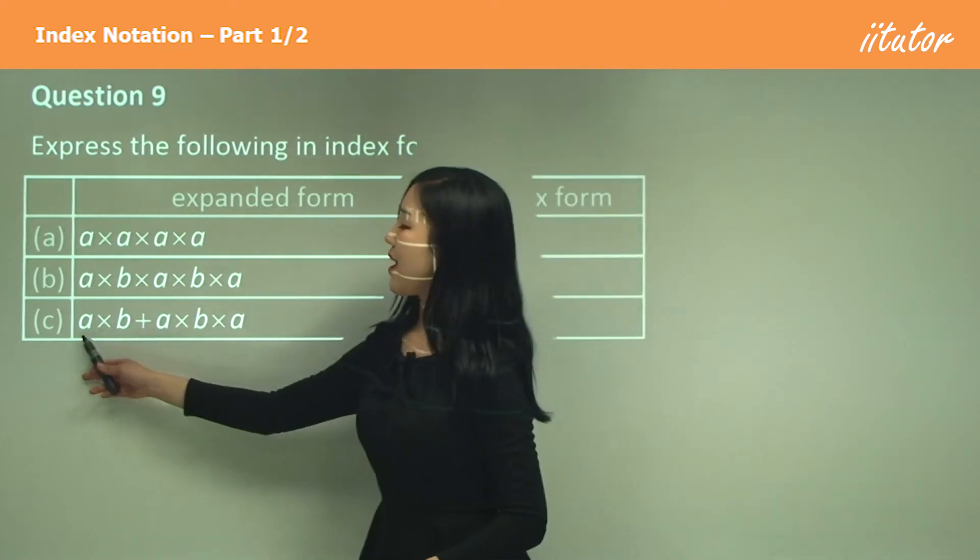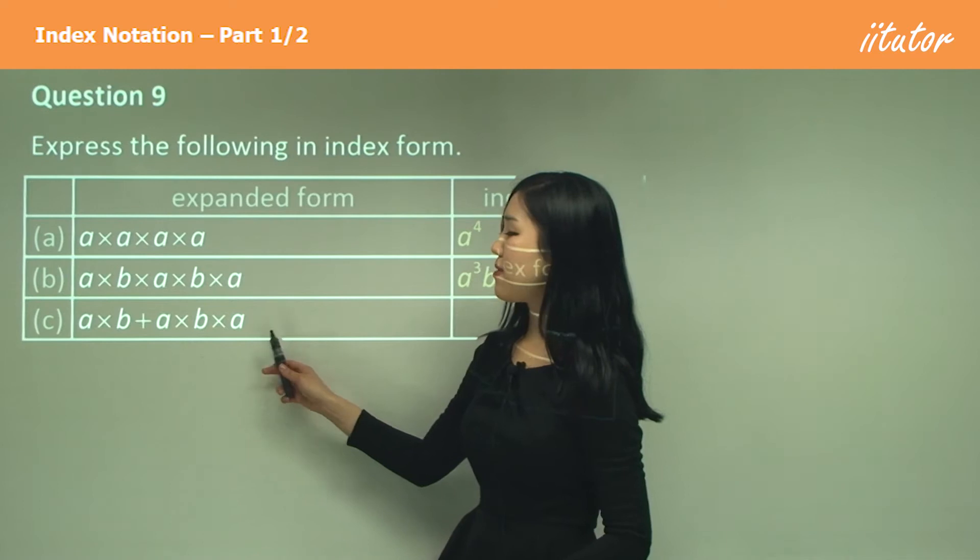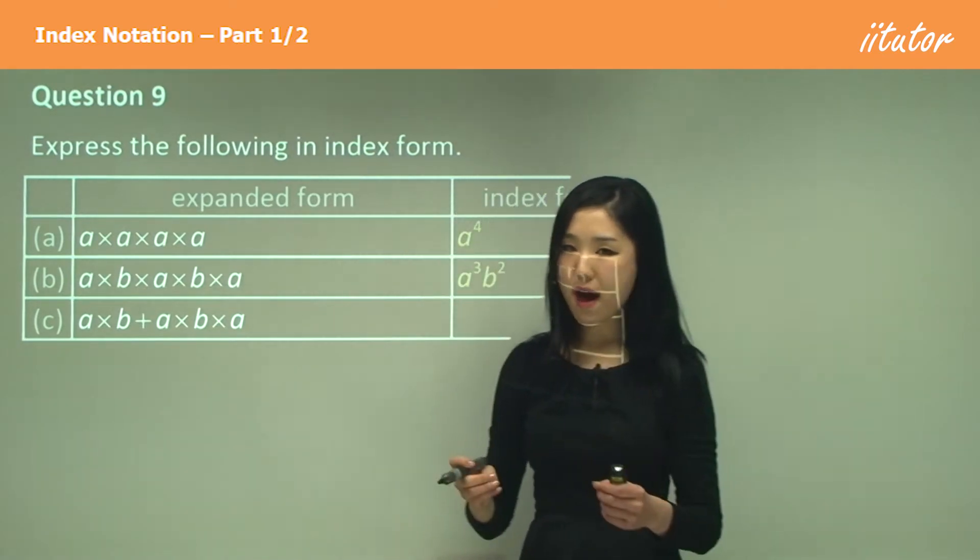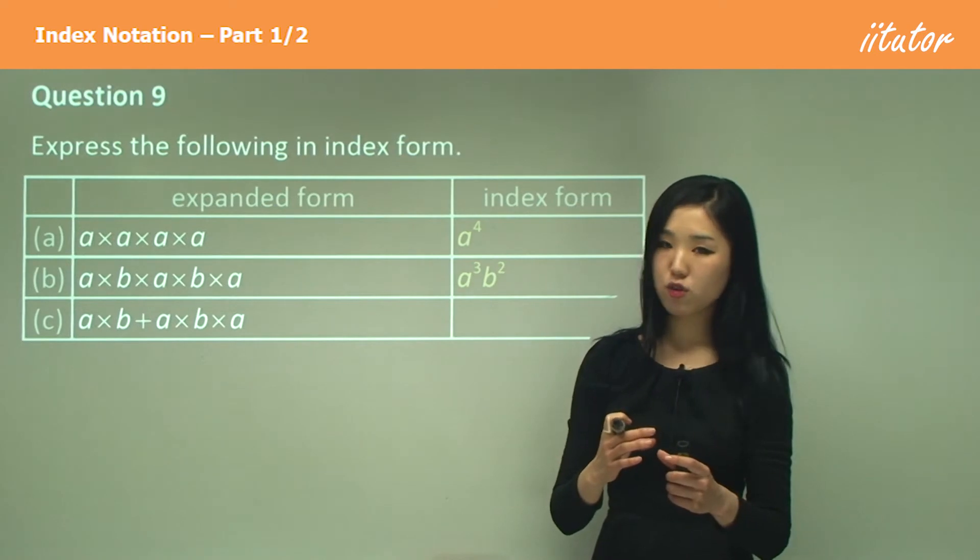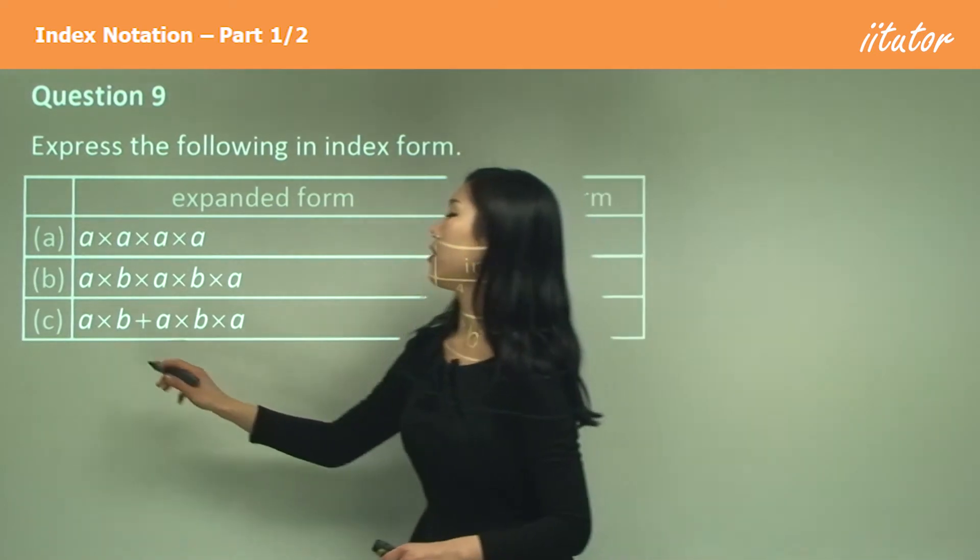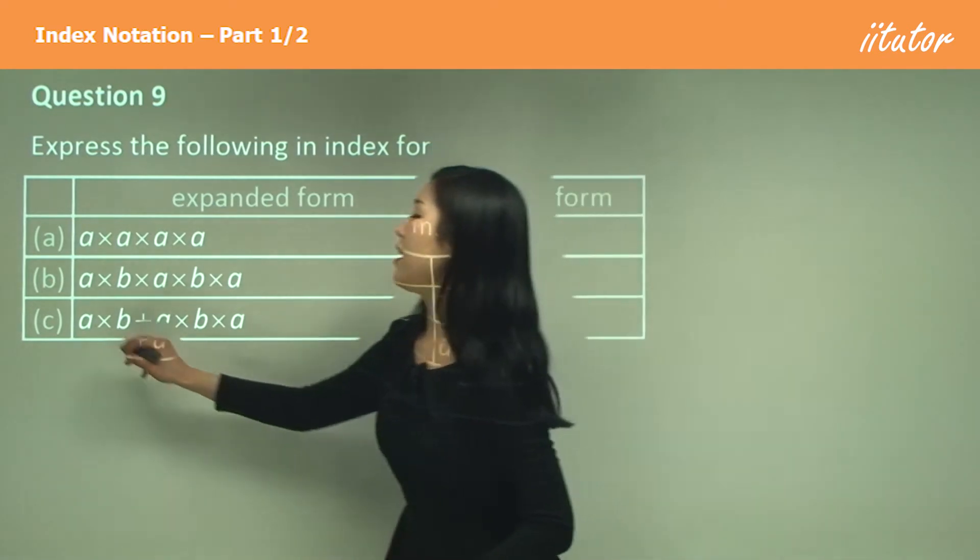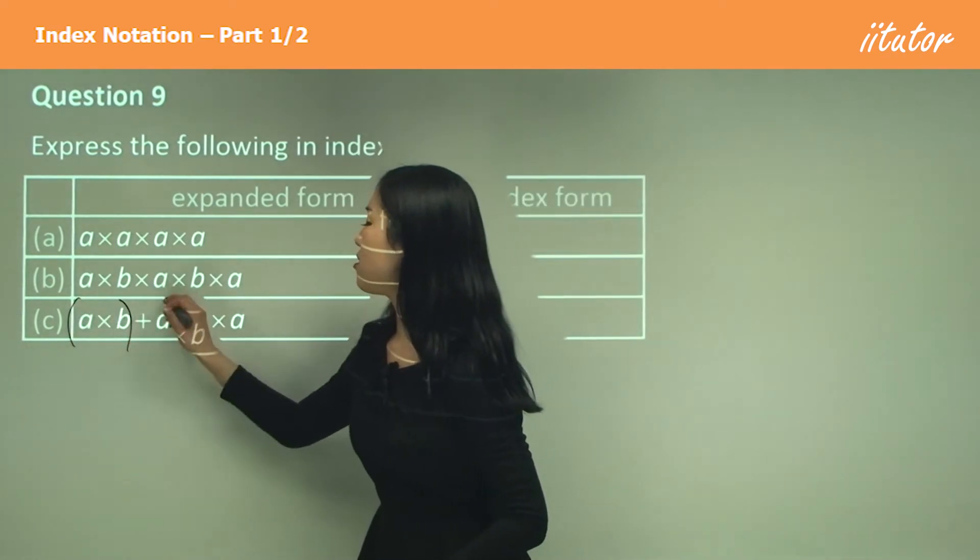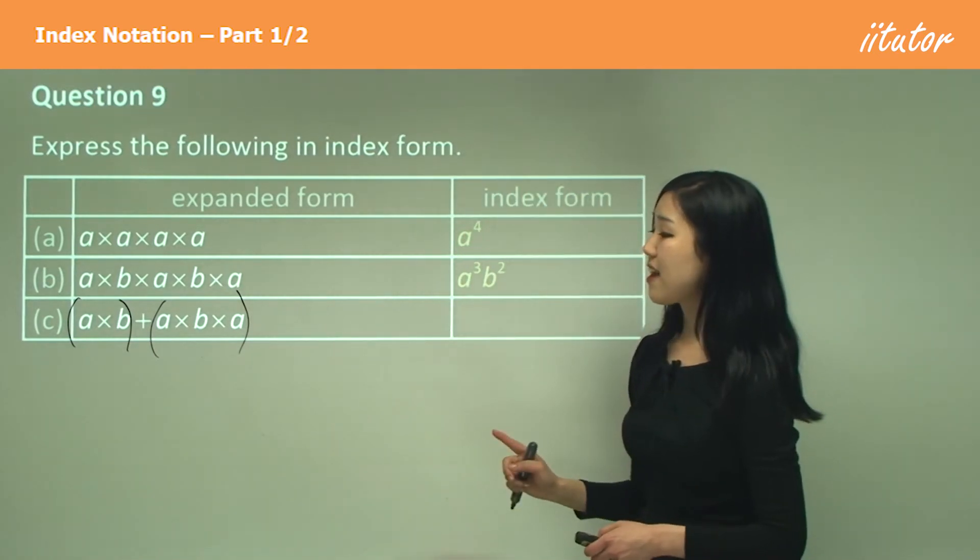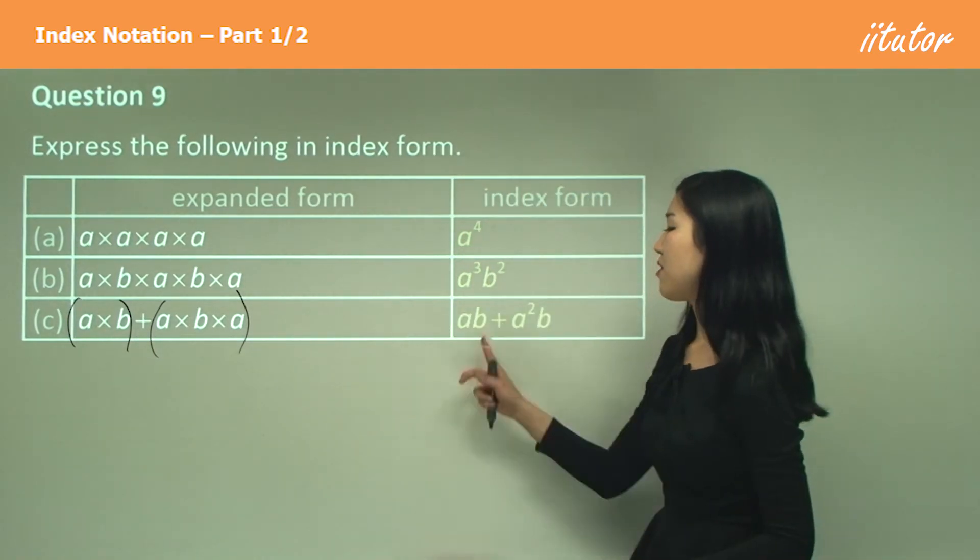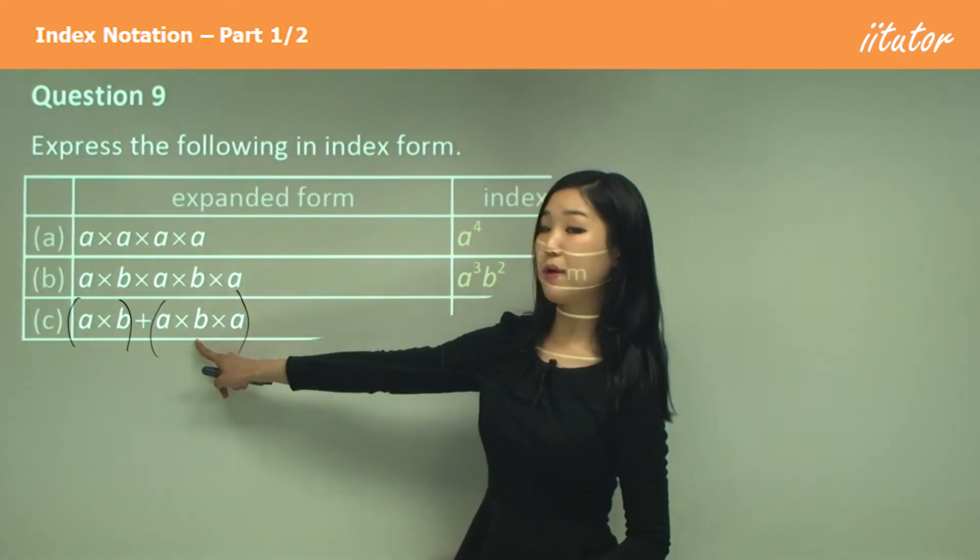So see how we're doing a times b plus a times b times a. So if we have plus or minus in between, you only look at where it multiplies. Don't do anything with the addition. As long as they're like terms, you can add it up. But here I'm just using brackets just to divide these up just so you don't get confused. So what's a times b? A times b is just ab.